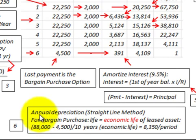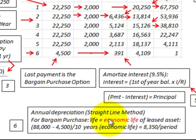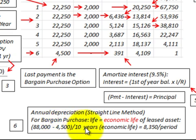For annual depreciation, we use the straight-line method. When working with a bargain purchase option, the useful life equals the economic life of the leased asset. Using the $88,000 capitalized amount minus the bargain purchase option of $4,500, divided by the economic life of 10 years, gives annual depreciation of $8,350 per year.